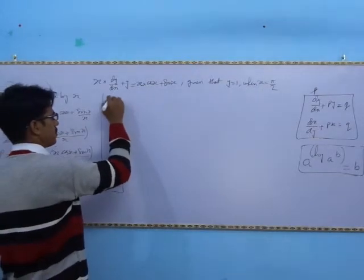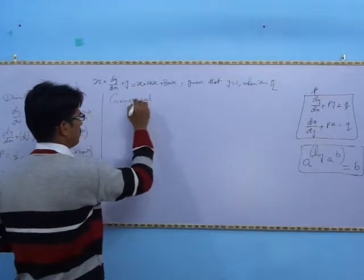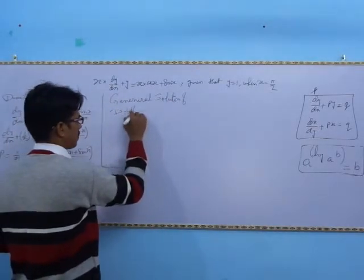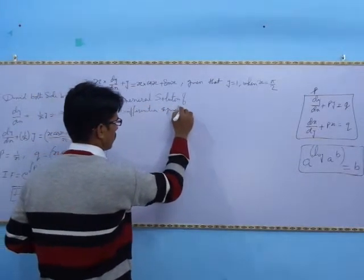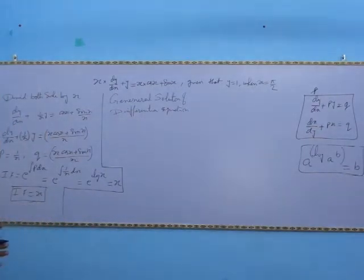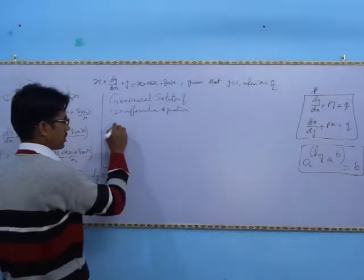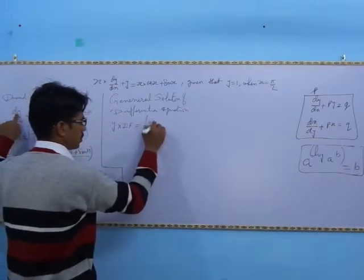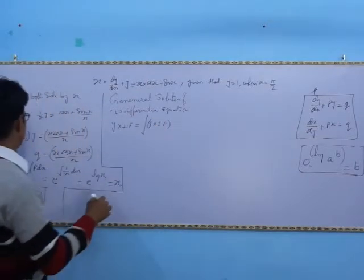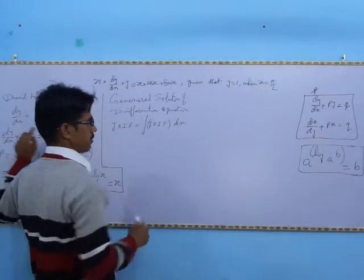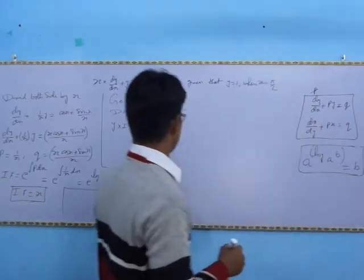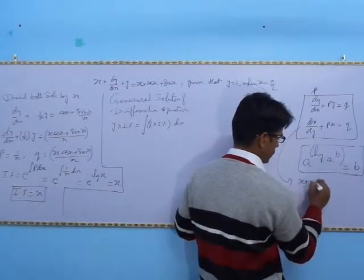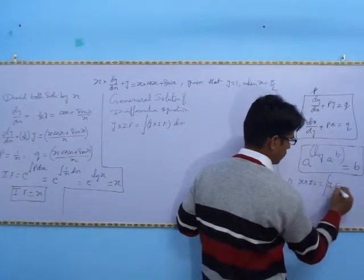After finding the integrating factor, we solve the general solution. Since this is a linear formation, the general solution is: y times integrating factor equals integration of Q times integrating factor dx. So x times integrating factor equals integration of Q times integrating factor, which gives us the general solution.